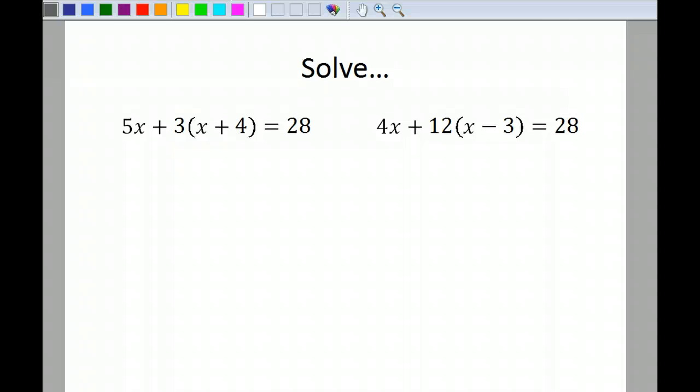Okay, this one's a little bit more complicated. We've got the distributive property in here. So the first thing we're going to do is drop down our 5x. Remember, I'm following the order of operations while I'm simplifying. So what is a positive 3 times x? It's going to give me a positive 3x. What is a positive 3 times a positive 4? It's going to give me plus 12. I'm going to bring down my equal sign and my 28.